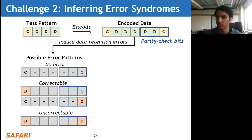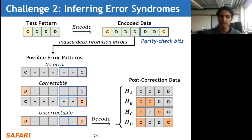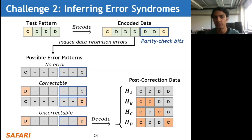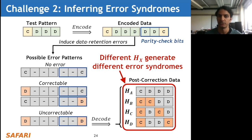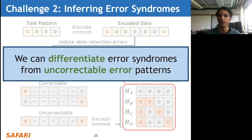The third case is uncorrectable errors where both charge bits flip. After ECC decoding, there are several possible post-correction data patterns we might observe, depending on the parity check matrix. For parity check matrix HA, the error syndrome points to a discharged data bit in the uncorrectable error pattern, so ECC corrects that and we observe no error. For parity check matrices HB, HC, and HD, the error syndrome points to one of the already-correct bits, which exacerbates the errors and we observe a two-bit error in the post-correction data even though there's only one error in the code word. Critically, different H matrices generate different error syndromes - we can differentiate error syndromes based on their uncorrectable error patterns.